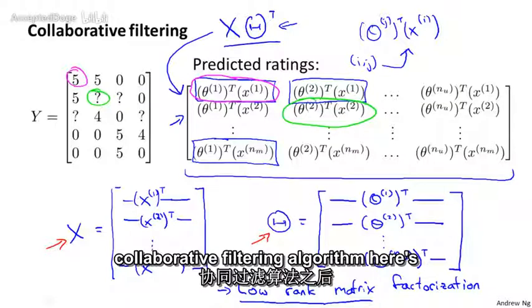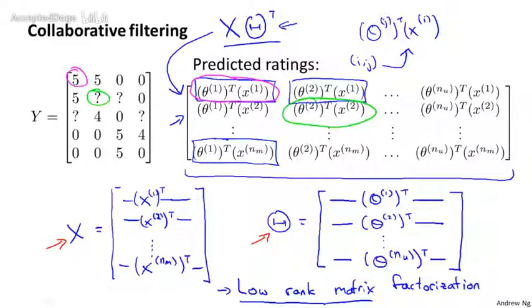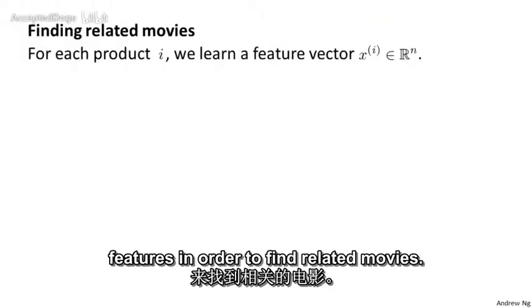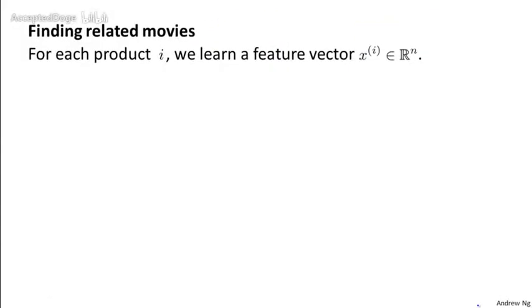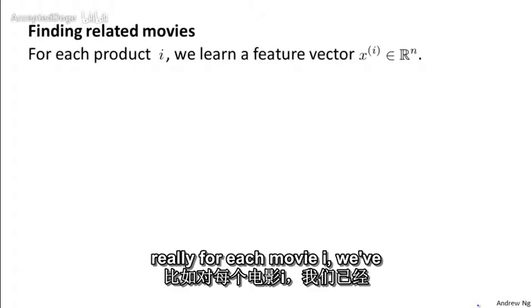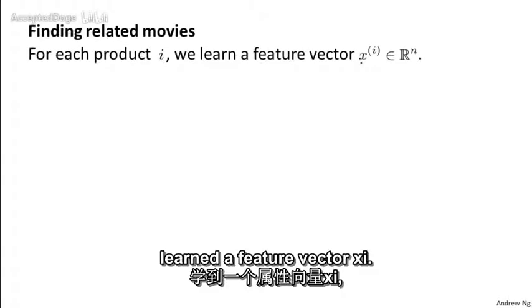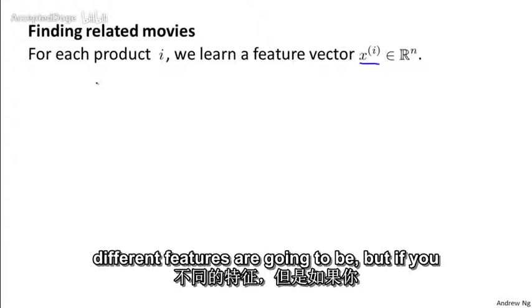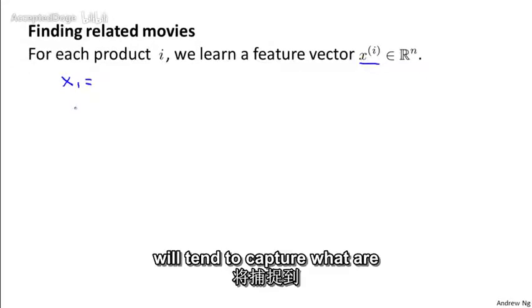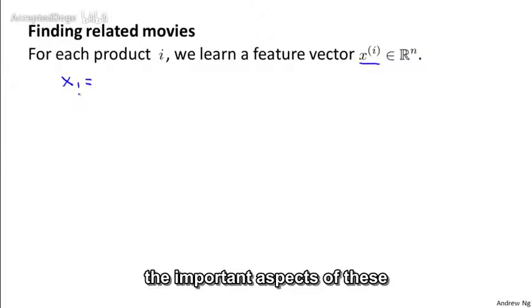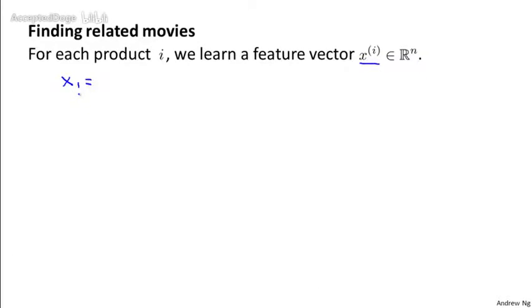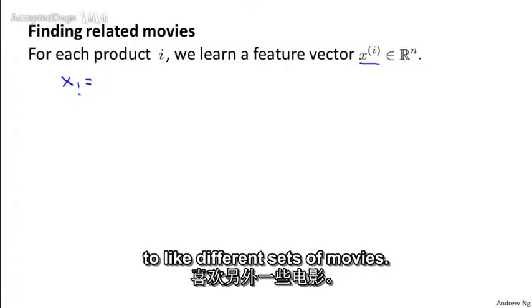Finally, having run the collaborative filtering algorithm, here's something else that you can do, which is use the learned features in order to find related movies. Specifically, for each product i, really for each movie i, we've learned a feature vector x i. So when you learn a set of features, you don't really know in advance what the different features are going to be. But if you run the algorithm empirically, the features will tend to capture what are the important aspects of these different movies or different products or what have you. What are the important aspects that cause some users to like certain movies and different sets of movies.